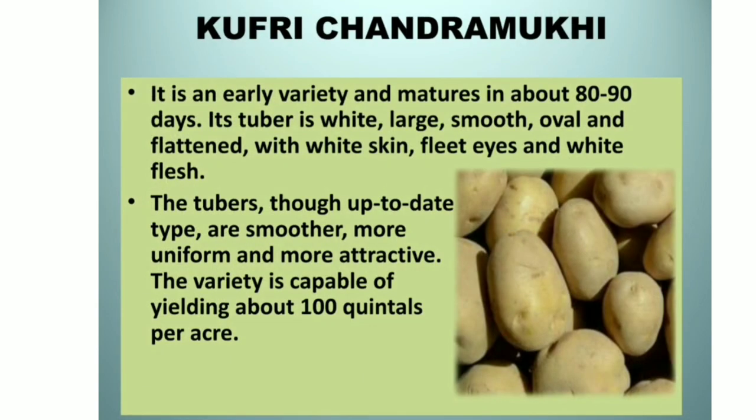Kufri Chandramukhi: it is an early variety and matures in about 80 to 90 days. Its tuber is white, large, smooth, oval and flattened with white skin, flat eyes and white flesh. The tubers are up-to-date type and are smoother, more uniform and more attractive. The variety is capable of yielding about 100 quintals per acre.